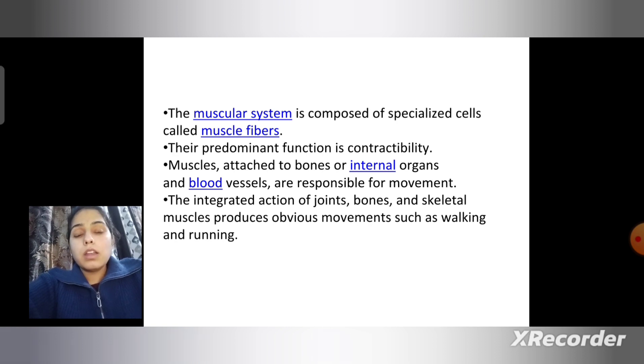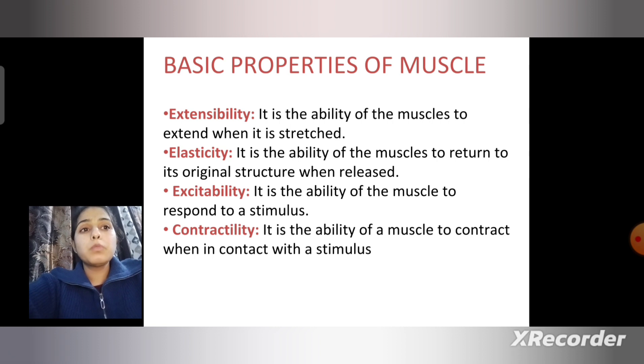The integrated action of joints, bones, and skeletal muscles produces obvious movements such as walking and running. The basic properties of muscle include extensibility, elasticity, excitability, and contractility.